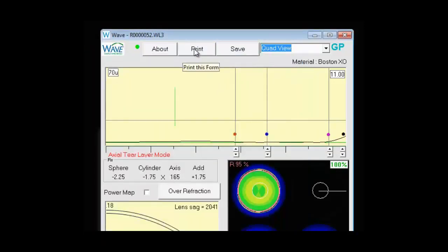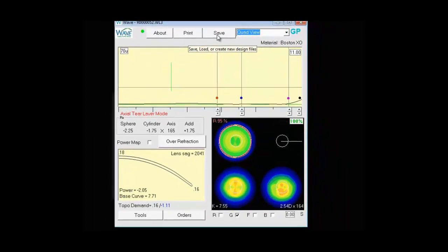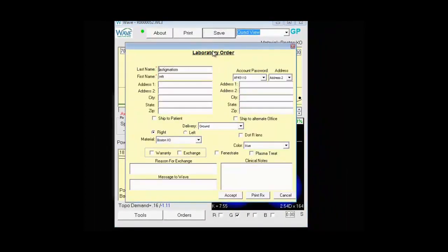Print will print the screen as you see it. Save. If you click Save, it will open up the lab order form. And here's where you can enter patient information if you want to ship to the patient. Your account information if you want to ship to a different office.